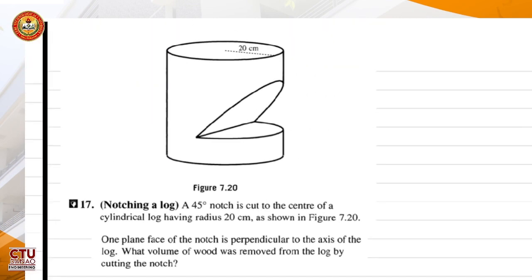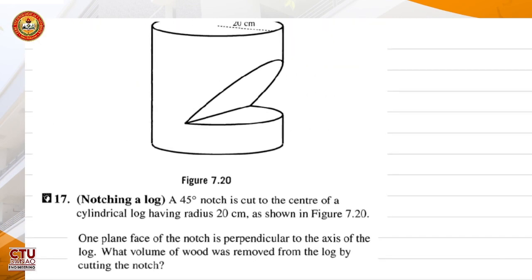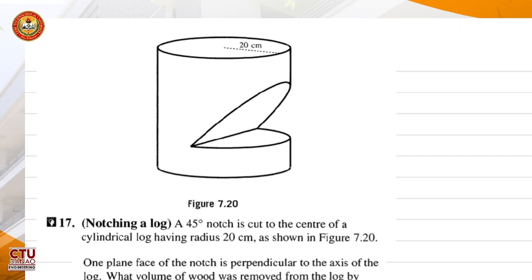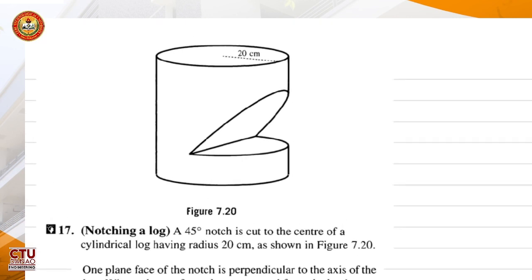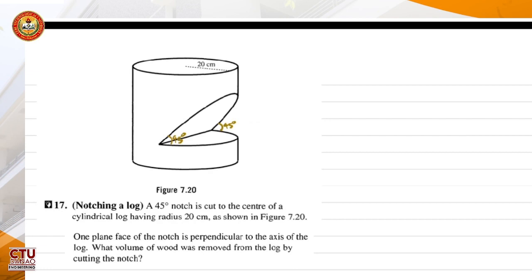Let's try this next problem. A 45-degree notch is cut to the center of a cylindrical log having radius 20 centimeters. One plane face of the notch is perpendicular to the axis of the log. What volume of wood was removed from the log by cutting the notch?